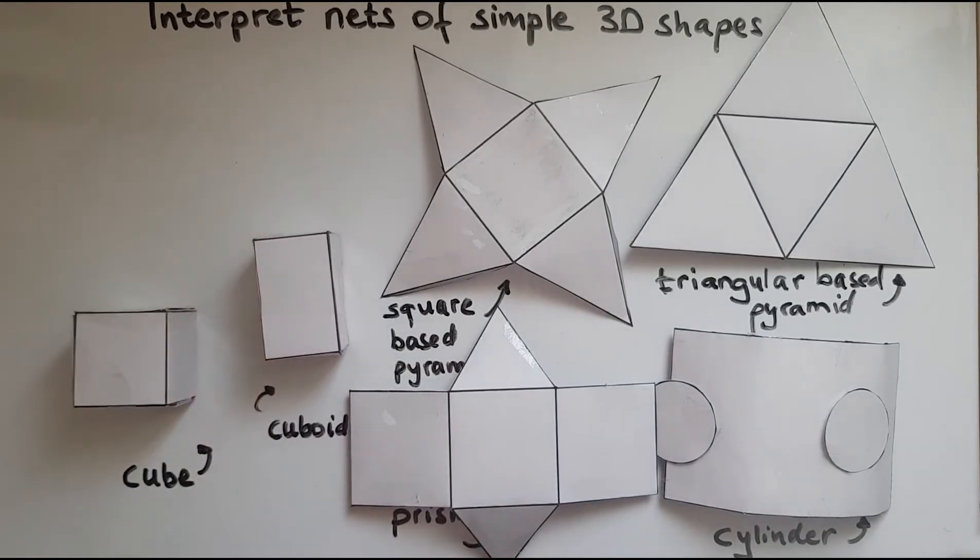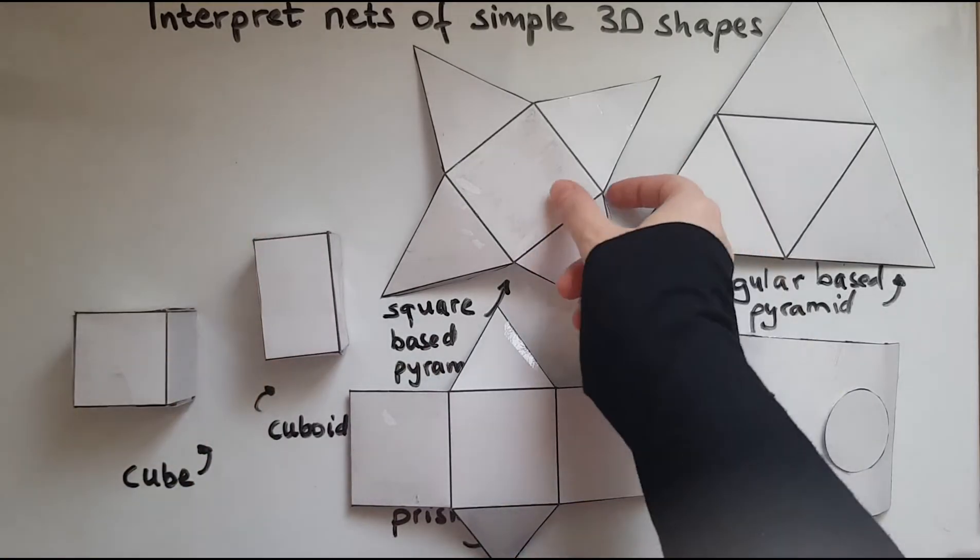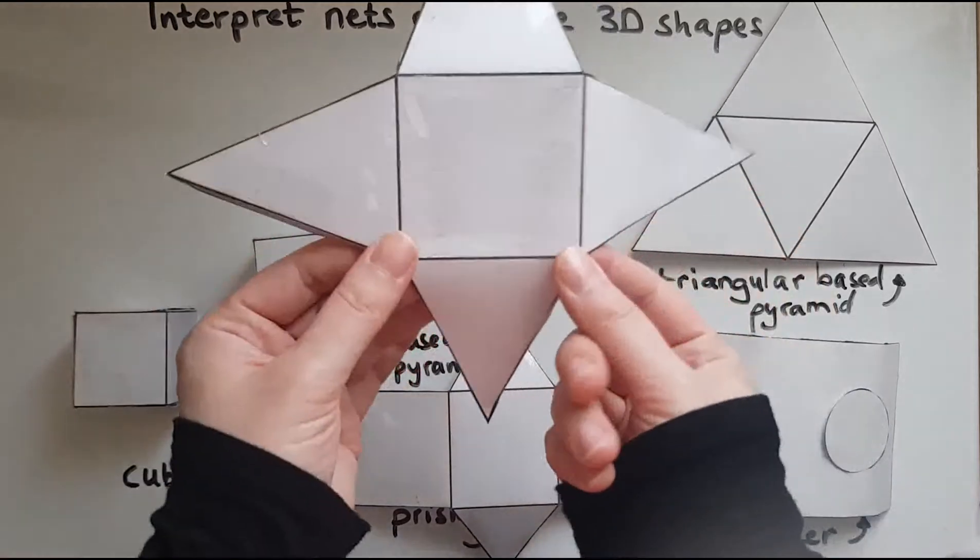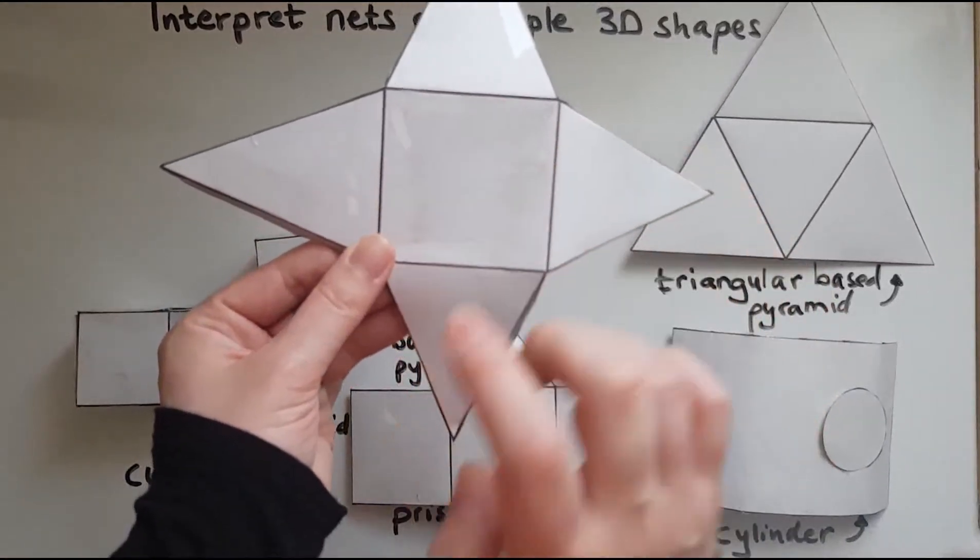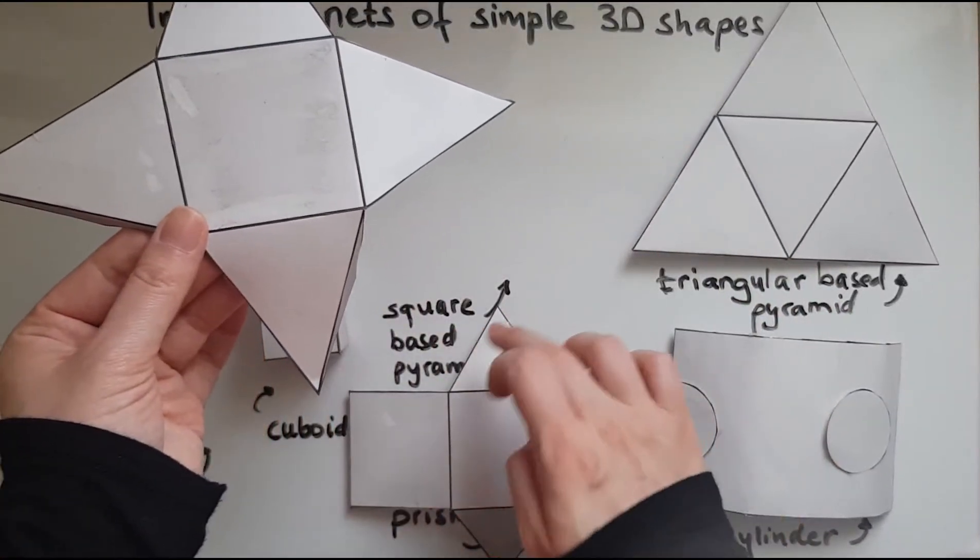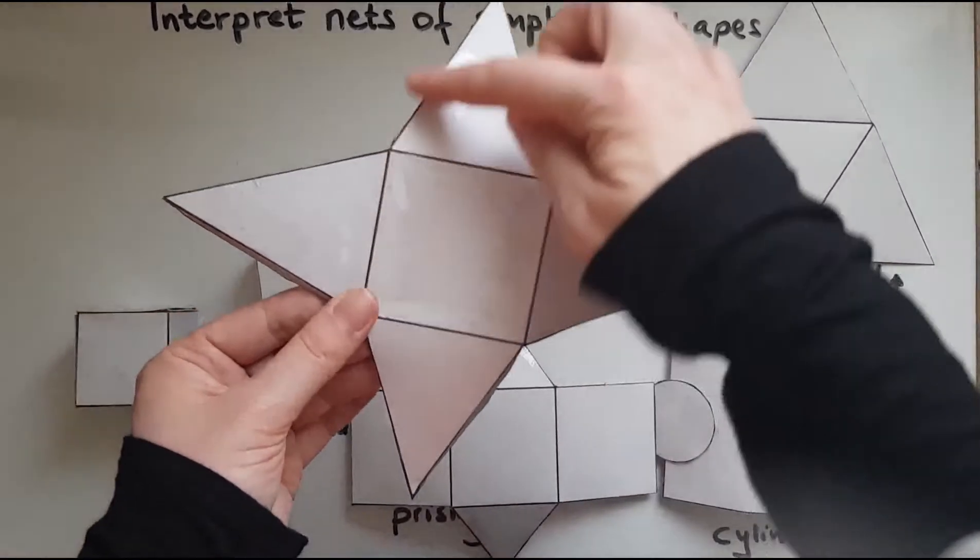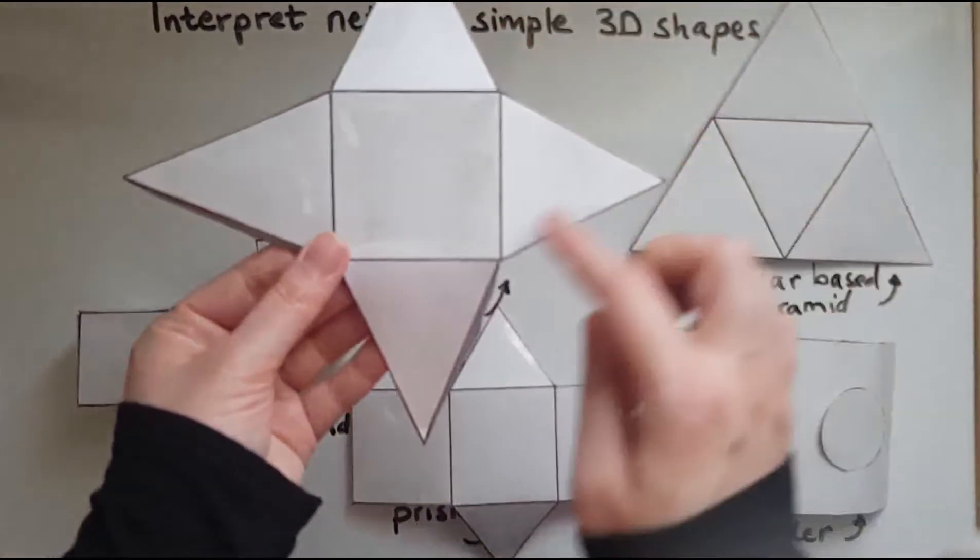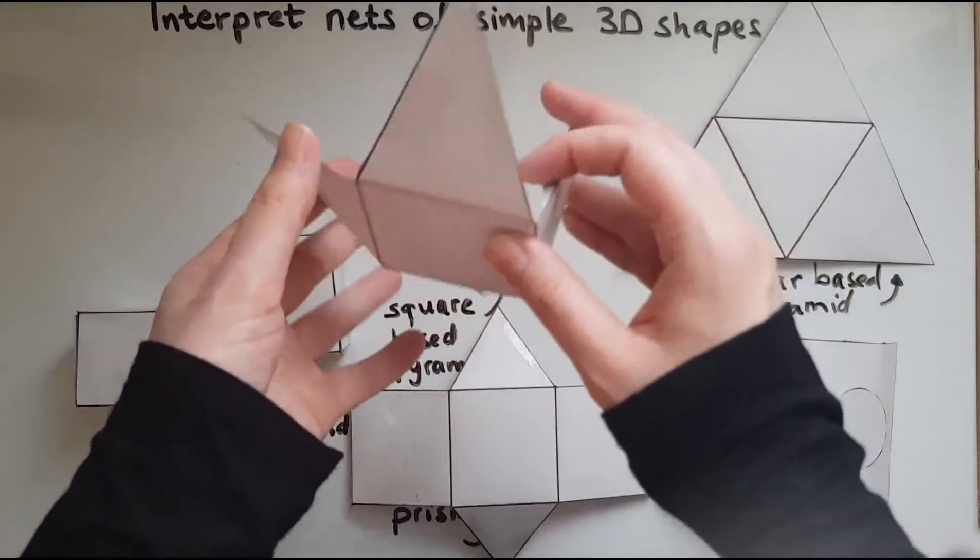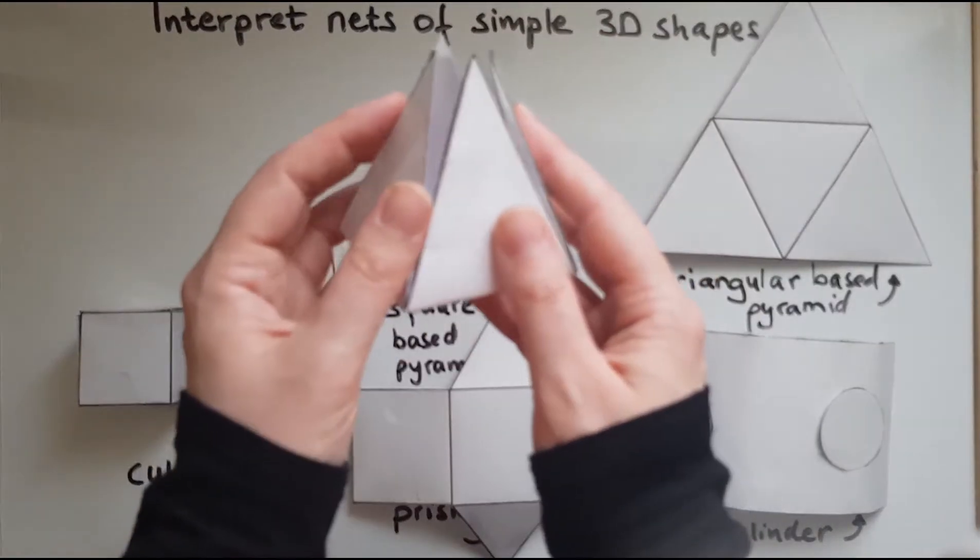And we'll now look at the square-based pyramid. So the center is a square. As the name suggests, square-based pyramid. And then we have the triangular sides as well, which will form the pointy pyramid at the top.